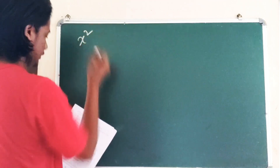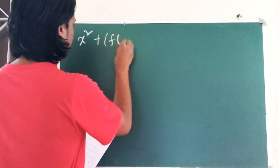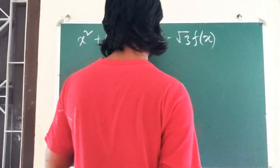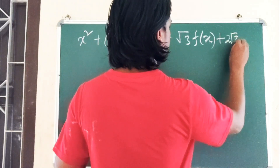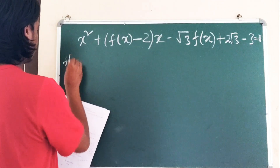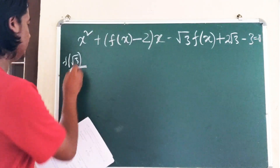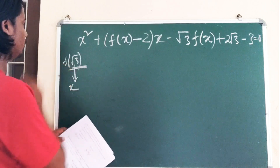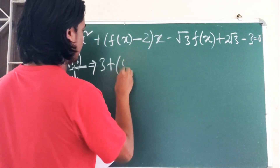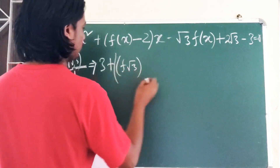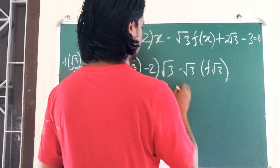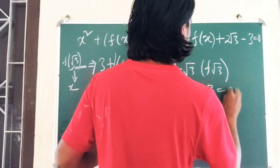The equation is: x² + f(x) - 2 times (x - √3) times f(x) + 2√3 - 3 equals 0. To find f(√3), substitute x = √3. Then (√3)² is 3, plus f(√3) minus 2 times √3, then minus √3·f(√3) plus 2√3 minus 2 equals 0.